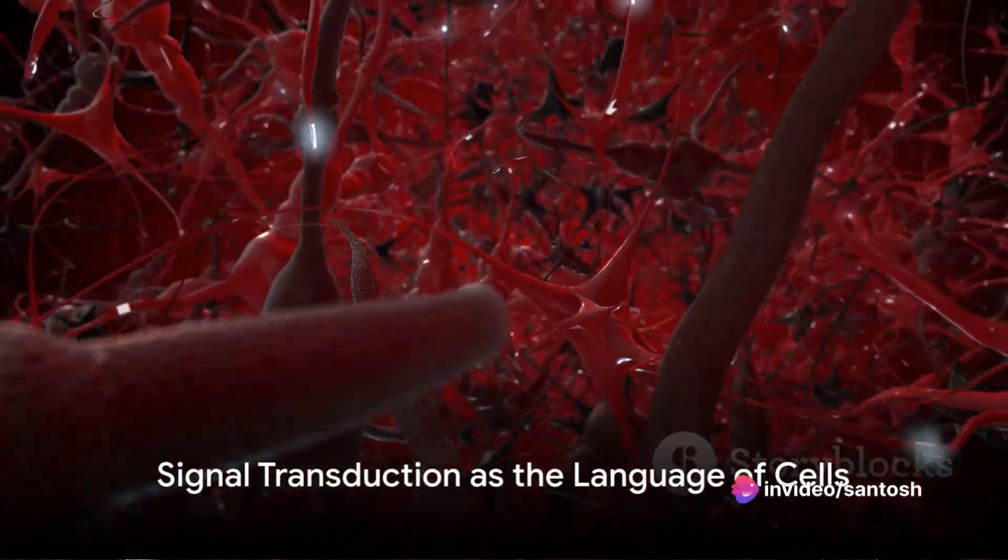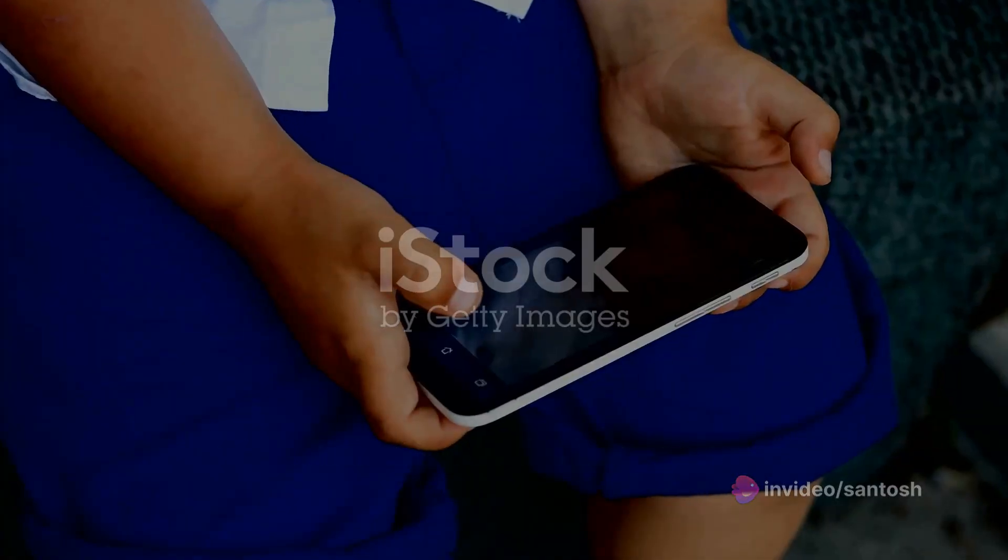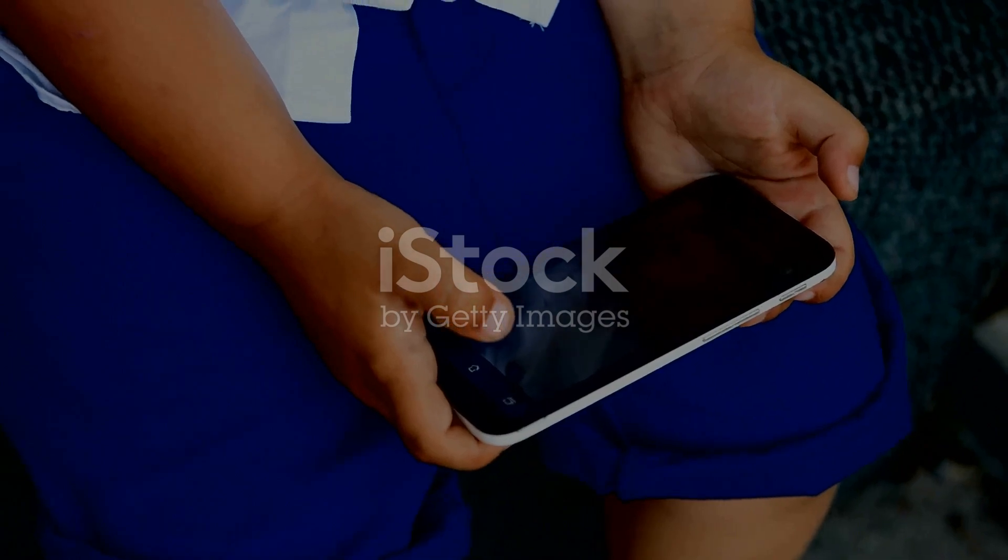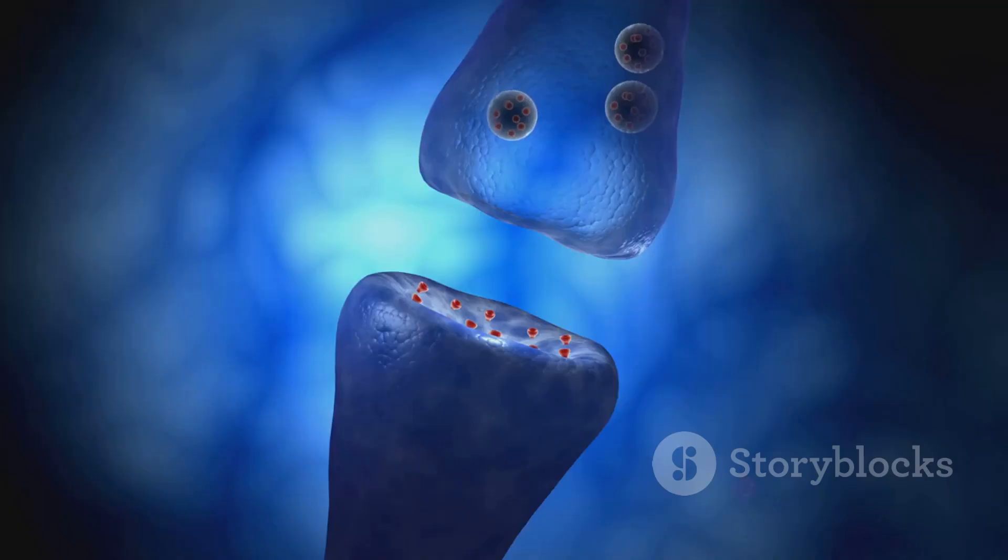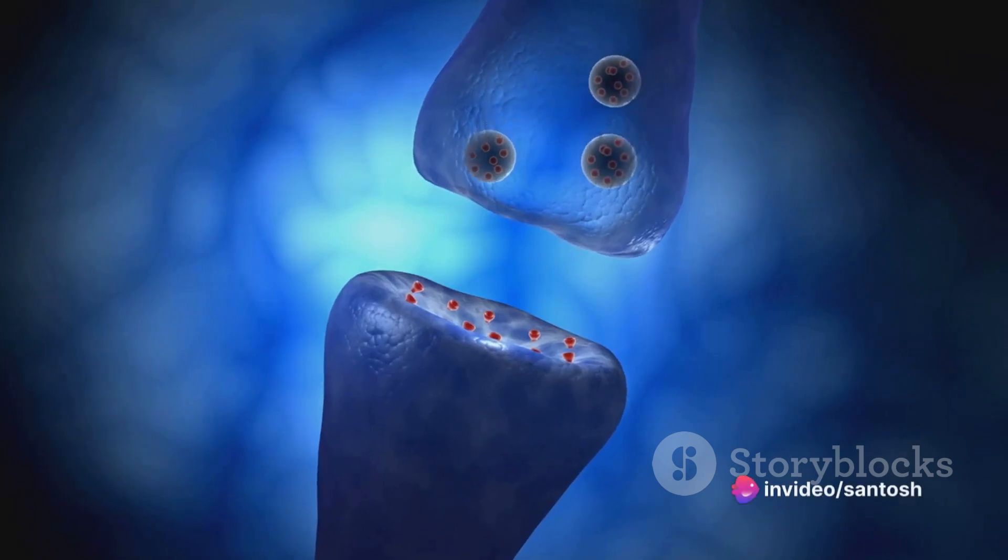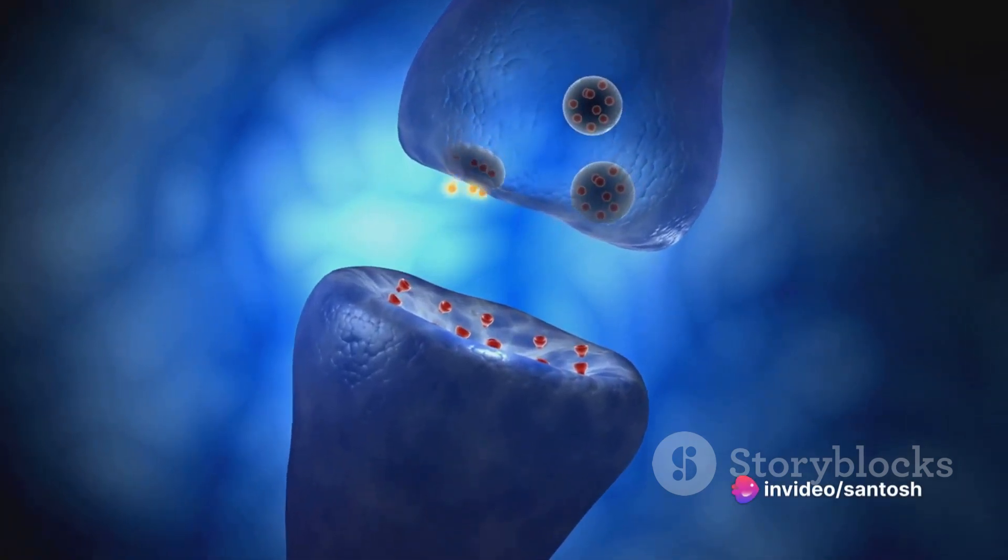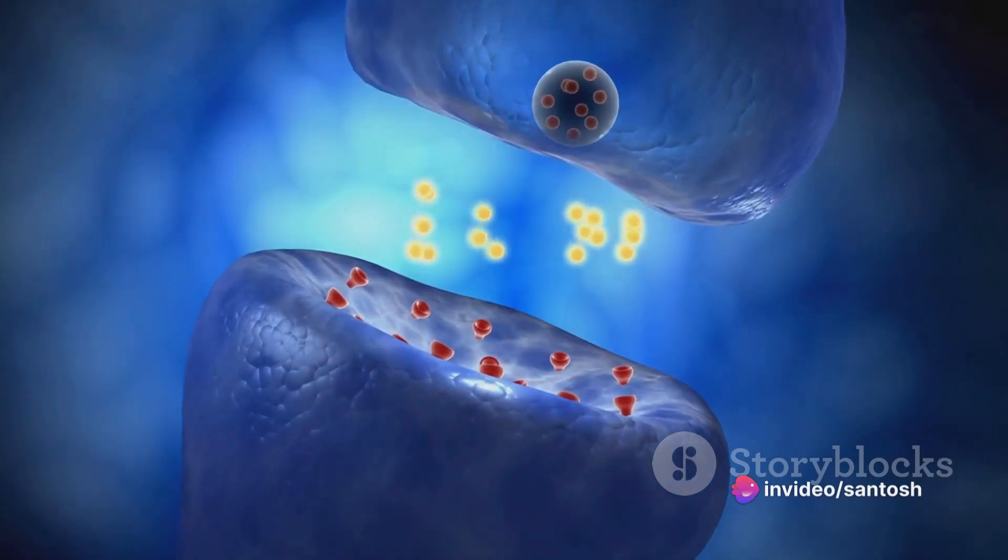Now think of signal transduction as the language of cells. Just as we need to understand a language to comprehend a message, cells need to decode chemical signals they receive. Signal transduction is the process where a cell transforms a signal from outside its boundary into a functional change within itself.